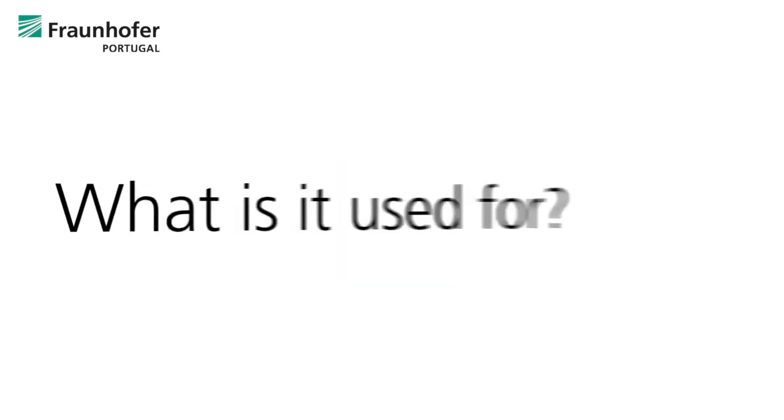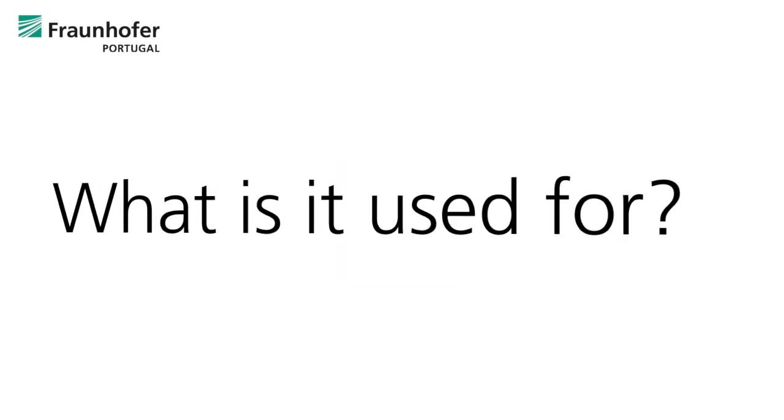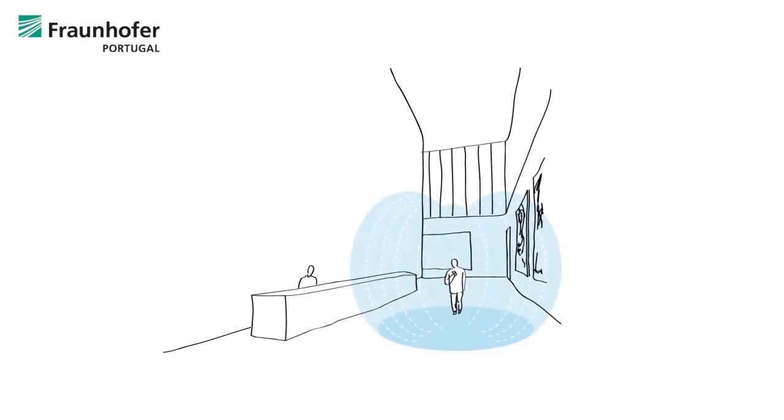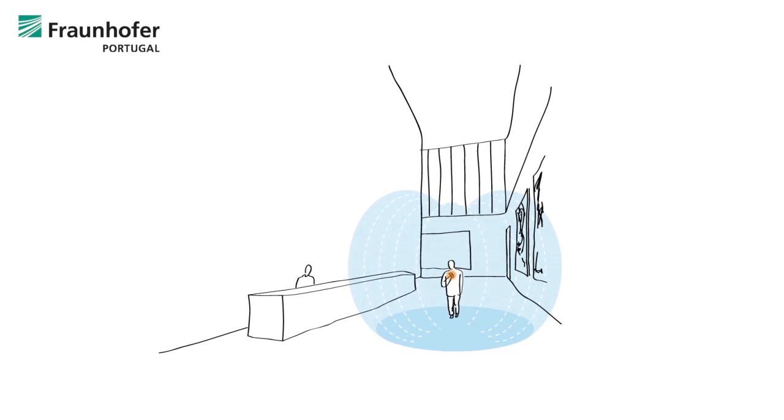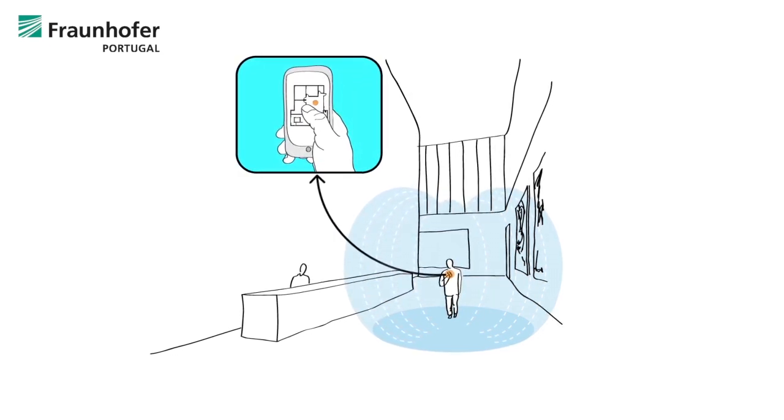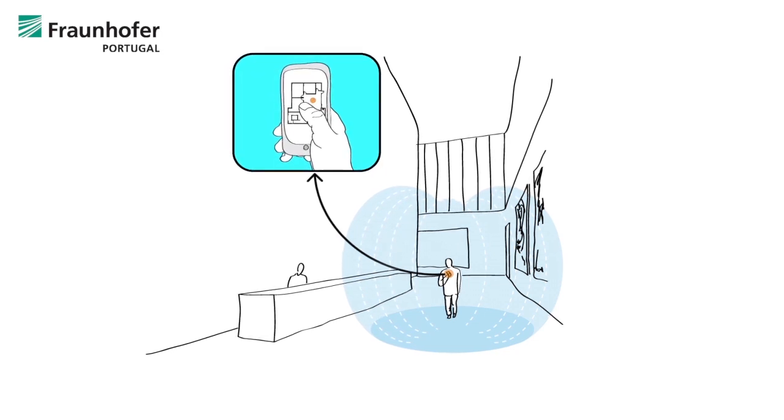So what can it be used for? ULFMC can be applied to a multitude of scenarios such as indoor location. Antennas installed in the floor, ceiling, or walls of buildings would transmit an in-building unique location ID to a smartphone passing by, allowing it to know where it is.